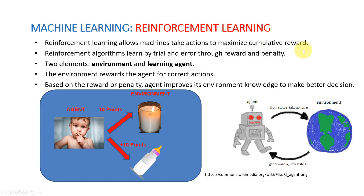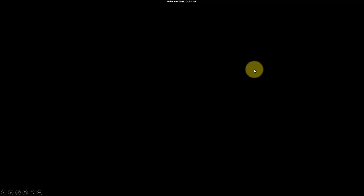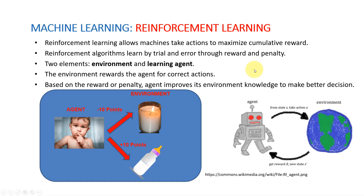Reinforcement learning allows machines to take actions to maximize cumulative reward. Reinforcement algorithms learn by trial and error through reward and penalty. There are two elements: the environment — the room — and the learning agent — the baby. The environment rewards the agent for correct actions and penalizes it for wrong ones, allowing the agent to improve its knowledge and make better decisions in the future.